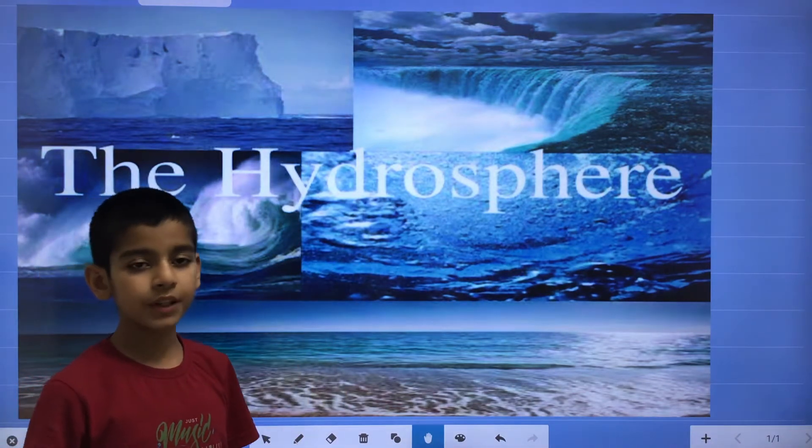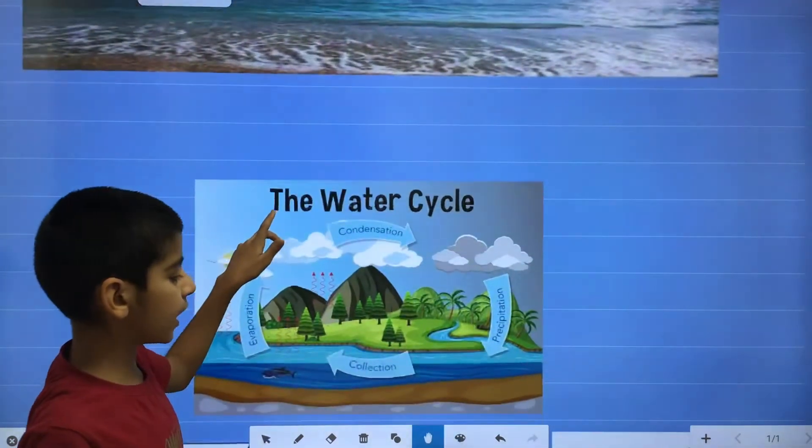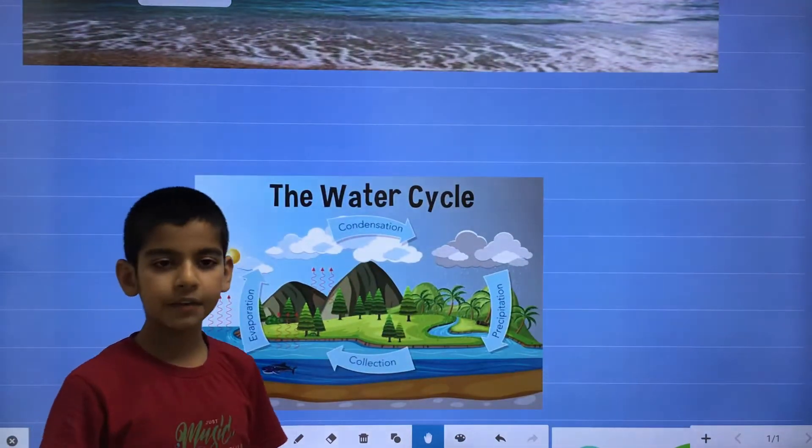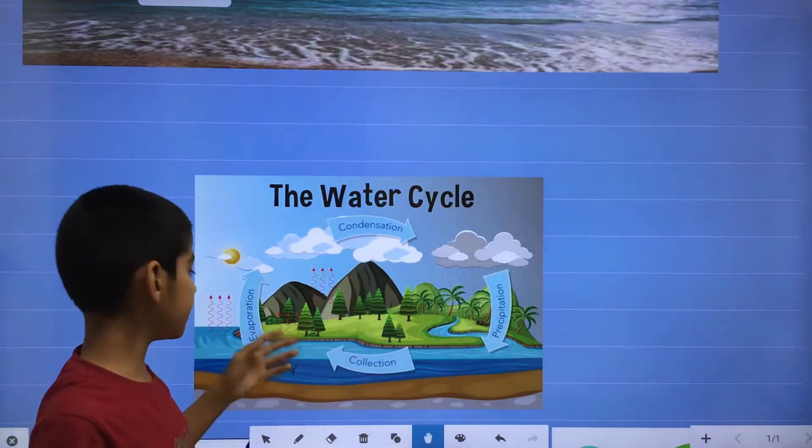So in hydrosphere, first we will learn water cycle. So in water cycle, from the water bodies, the water vapor rises up, so that process is known as evaporation.